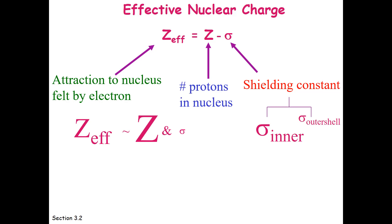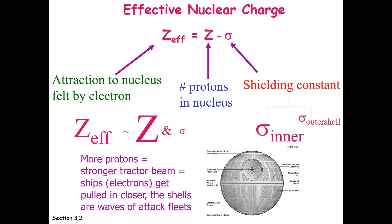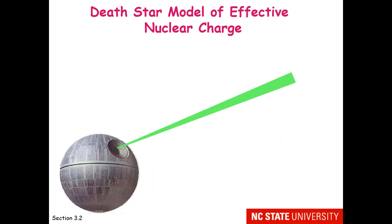Z_eff is similar to the atomic number but adjusted slightly by shielding. I like to think of the attraction the electron feels to the nucleus as a tractor beam drawing in ships to the Death Star. The more protons, the stronger the tractor beam. The ships, which are electrons, are going to get pulled in closer, and the shells—the 1s, 2s, 2p—are waves of attack fleets. Here is the Death Star model of effective nuclear charge.